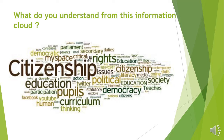What do you understand from this information cloud? This is a diagram that we call an information cloud. There are many concepts — for example, Parliament, Democratic, Duties, Citizenship, Issues, Political, Society, Democracy, Human Participation, and Critical Thinking. These are all several interlinked concepts. They combine to make a holistic picture of citizenship education.